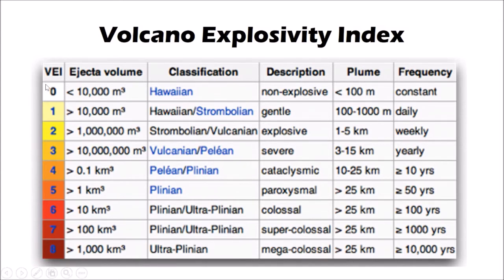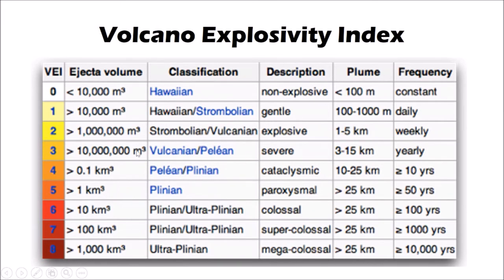The VEI is a nine-point scale ranging from zero up to eight - unlike earthquakes, you can't have a 4.2; eruptions fit into one of these nine categories. The level on the Volcano Explosivity Index is determined predominantly by the volume of material ejected by a particular eruption. As you go up that scale, the volume increases by a power of 10 each time - so a VEI of four releases 0.1 cubic kilometres of material, whereas a VEI of five releases one cubic kilometre. This scale is known as a logarithmic scale, going up by a factor of 10 each time.